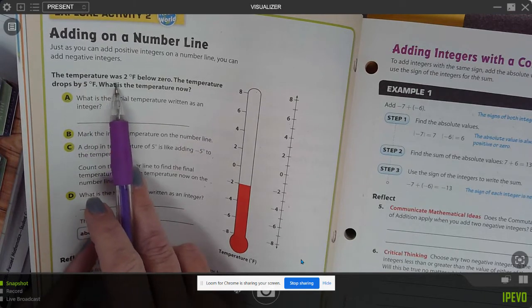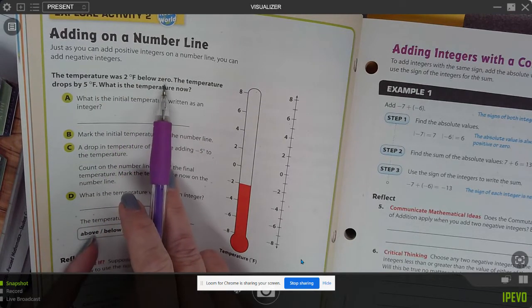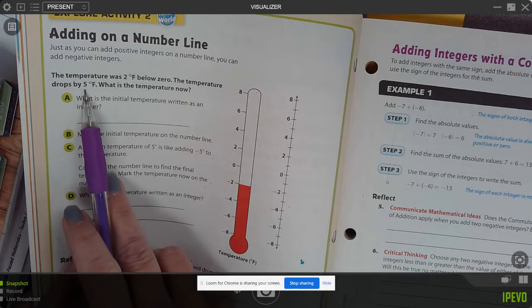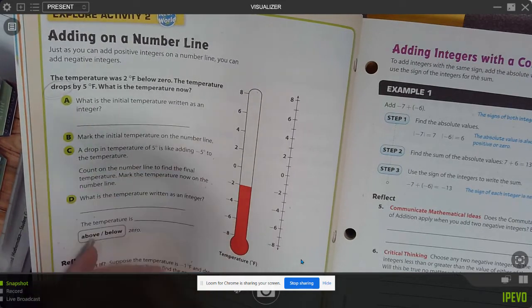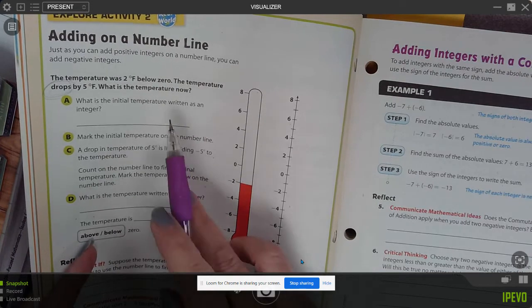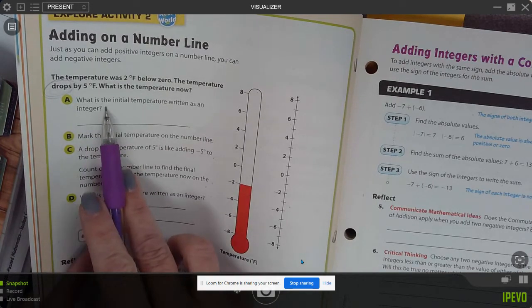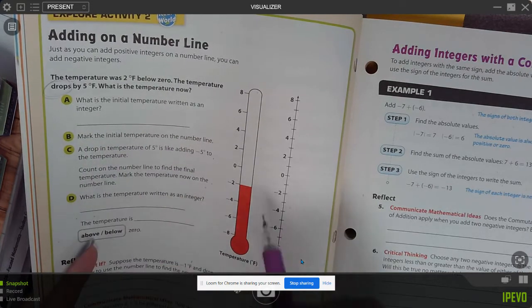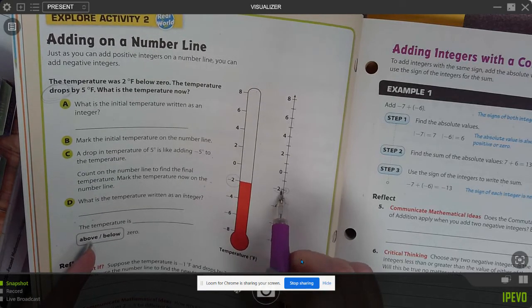Just like you add positive integers or subtract positive integers, you can add negative integers. So this one is the temperature was negative two degrees below zero. The temperature drops by five degrees. So it's dropping. That means it's negative five more. What is the temperature now? So what is the initial temperature written as an integer?